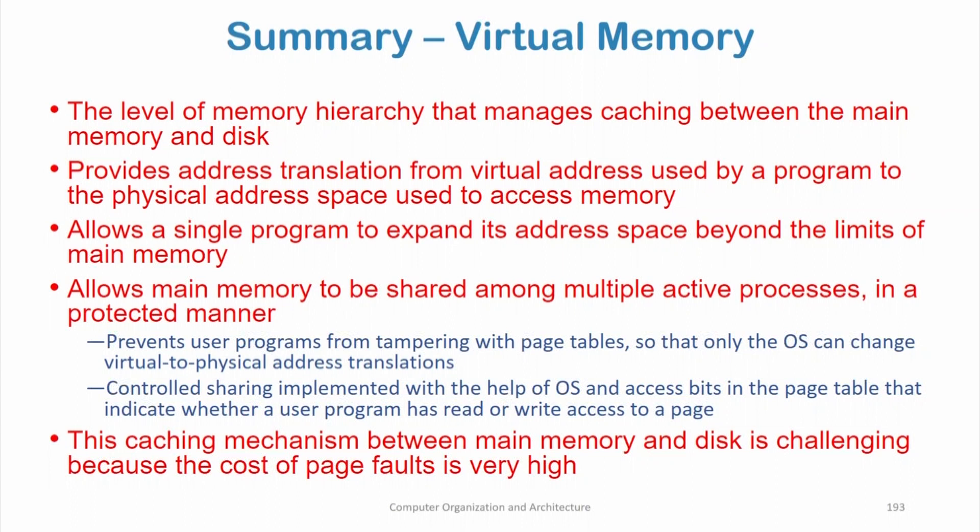Virtual memory allows main memory to be shared among multiple active processes in a protected manner. This protection is given by preventing user programs from tampering with page tables, so that only the OS can change virtual to physical address translations. It also allows controlled sharing of pages between different programs, implemented with access bits in the page table that indicate whether a program has read or write access to a page.